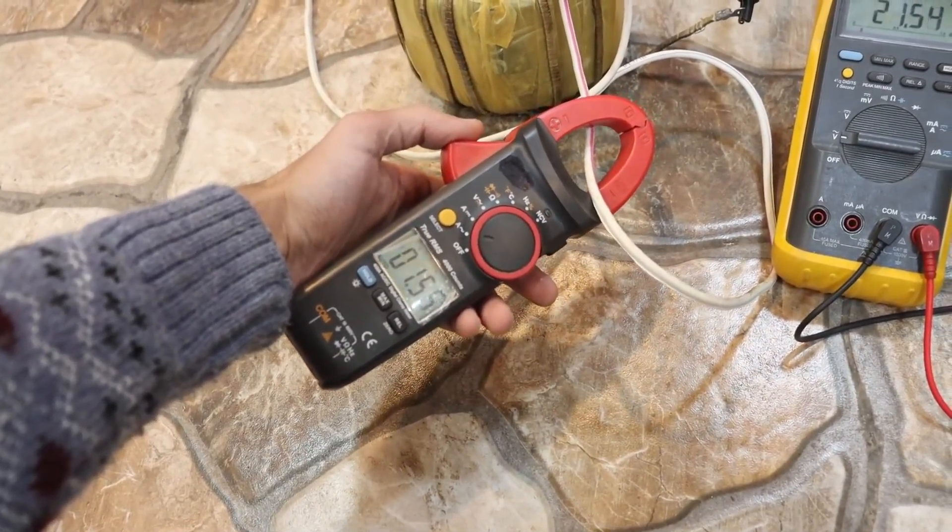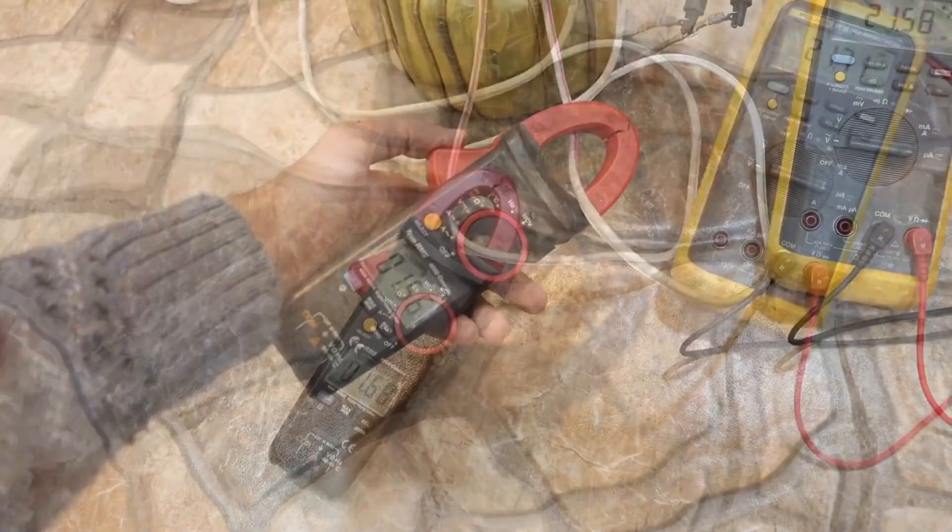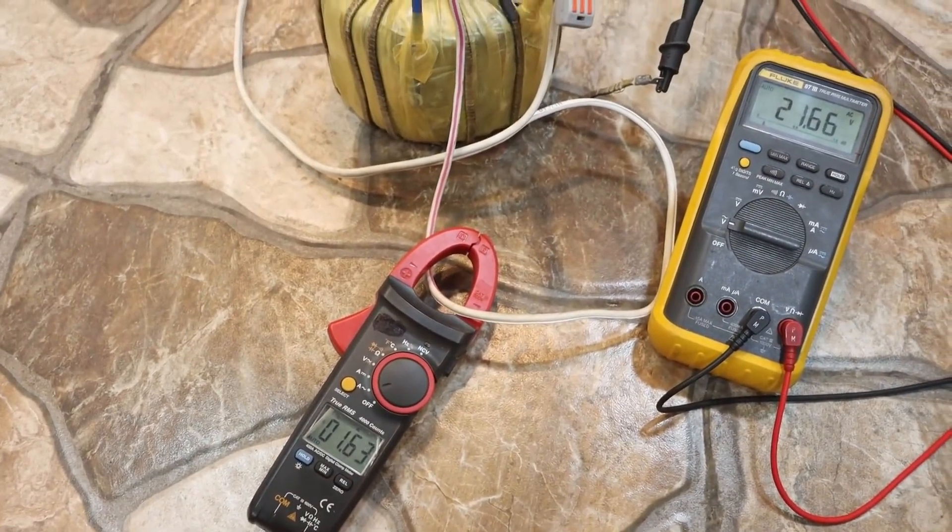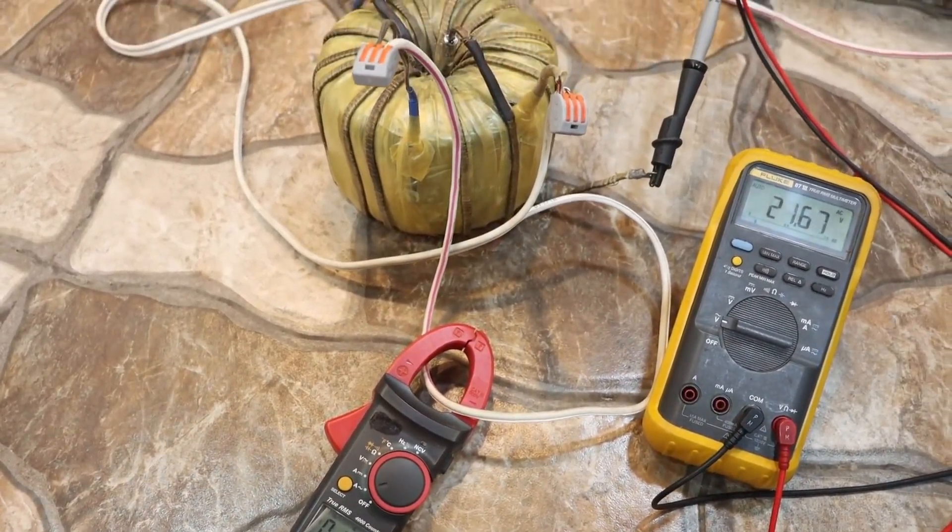I settled on a value of 1.5 to 1.6 amperes. And this is a necessary measure. If I increase the number of turns further to reduce the no-load current, the secondary winding won't fit.